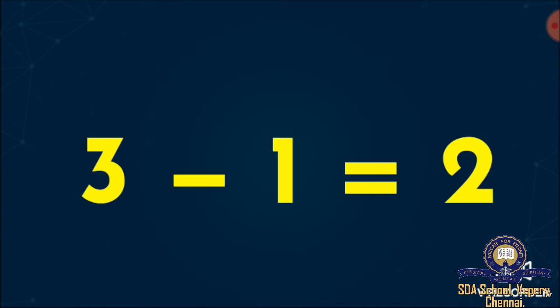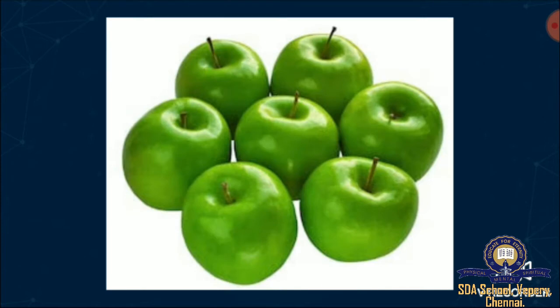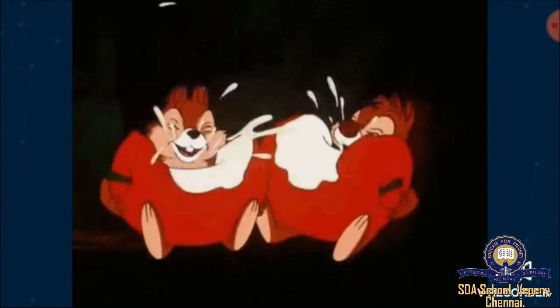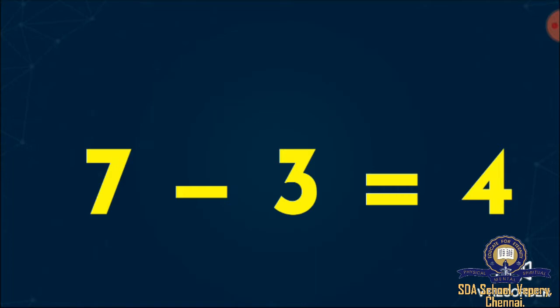Next, count and tell me how many apples are here. We have got one, two, three, four, five, six, and seven apples. Now we are going to eat three apples. After eating three apples, what will be the remaining apples? The remaining will be four. Count and see — this girl is having four apples. After eating three apples from seven, we will get the answer four. Seven minus three equals four.